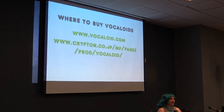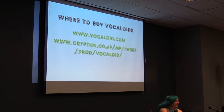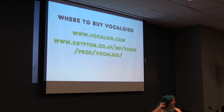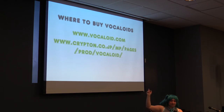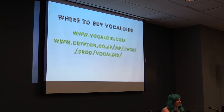Where to buy Vocaloid: there's tons and tons of merch, but for the software — if you're interested in making music — Vocaloid.com for any English releases. If you're interested in the Krypton ones specifically, there's their webpage. Most people just buy the physical copy on Amazon, but at Vocaloid.com you can download a lot of the software directly.